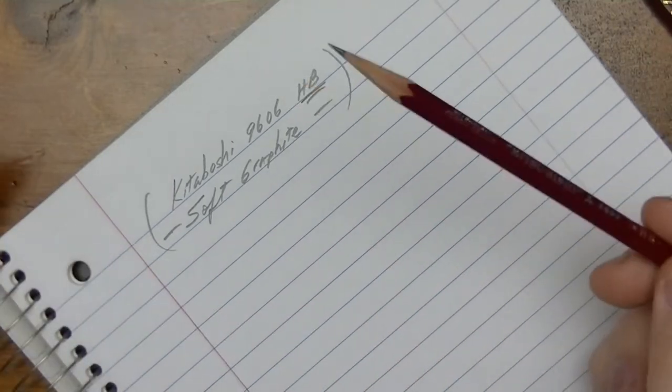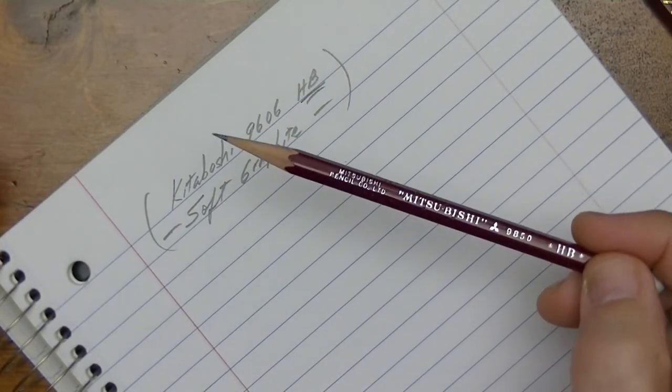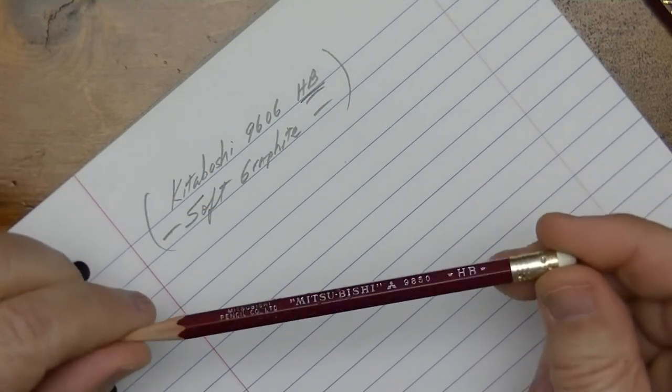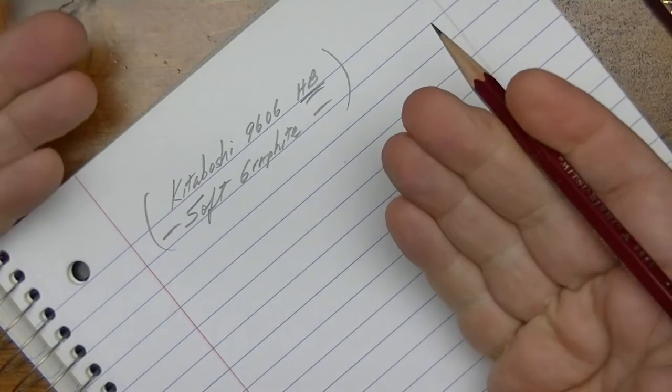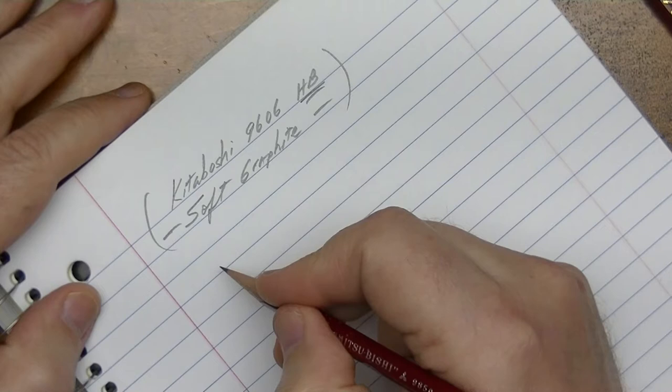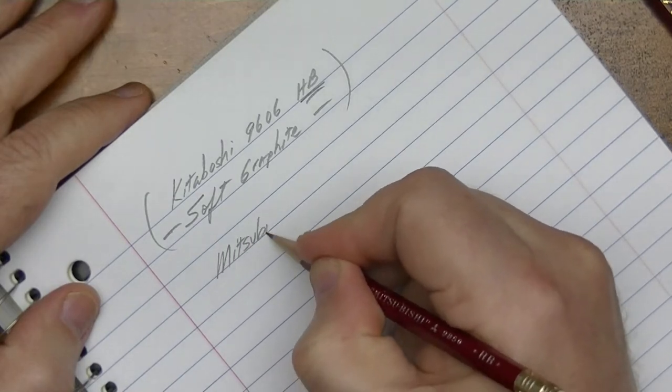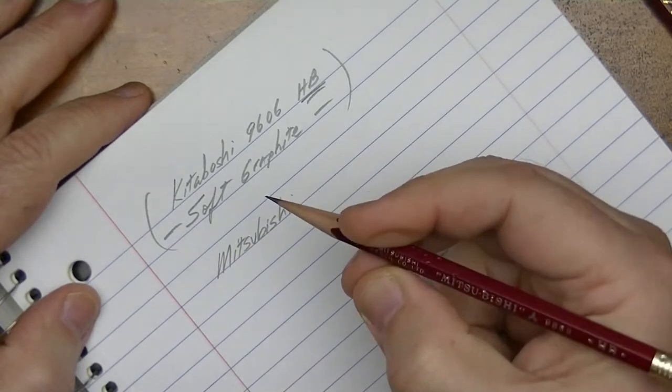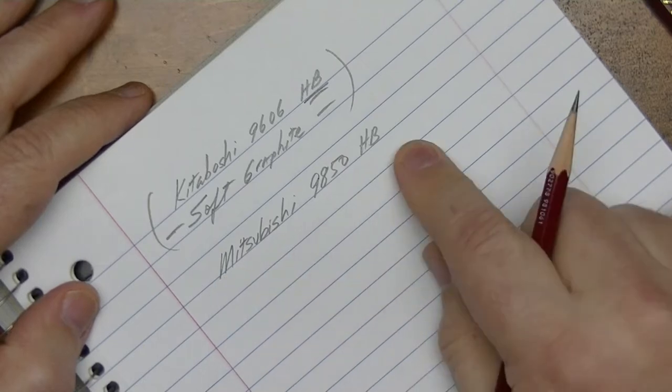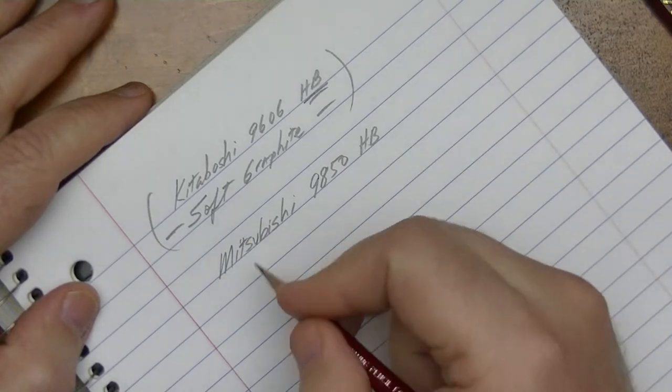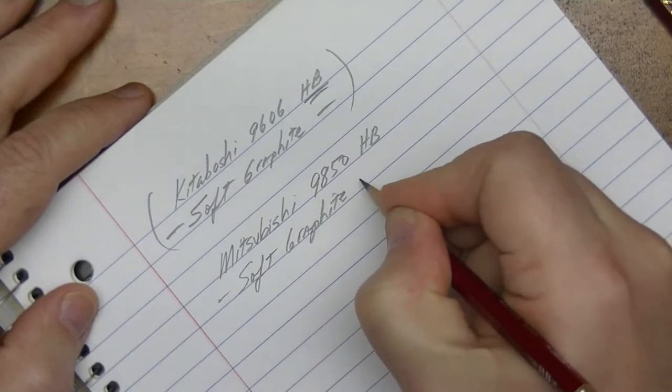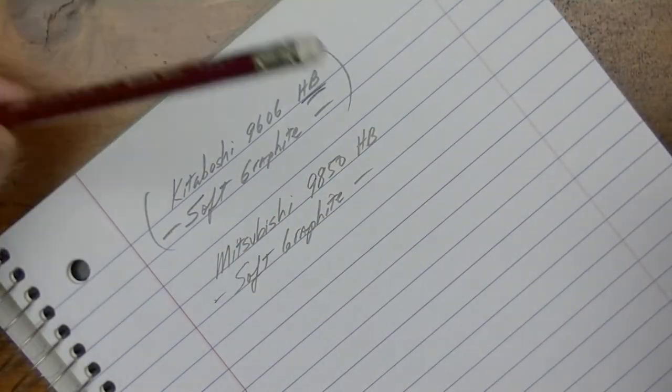Now, with that said, I don't remember what the Mitsubishi felt like. It's been sitting in my box for many months now. I haven't used it since. So I'm going to get reminded at this very moment. So this is the Mitsubishi 9850 HB. It is also a very good tonal quality here. It also is soft graphite. So it has that.